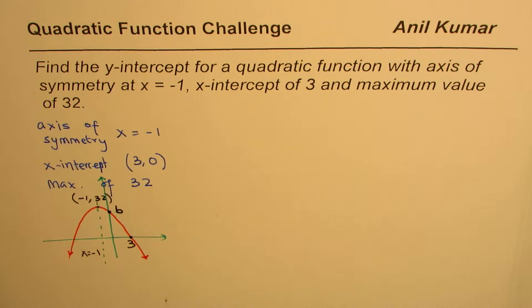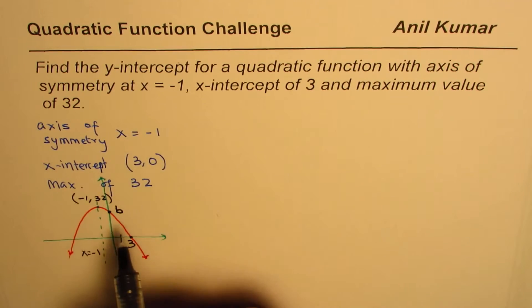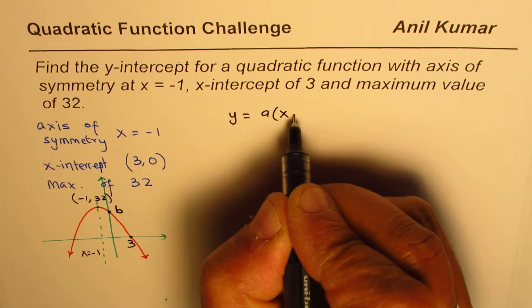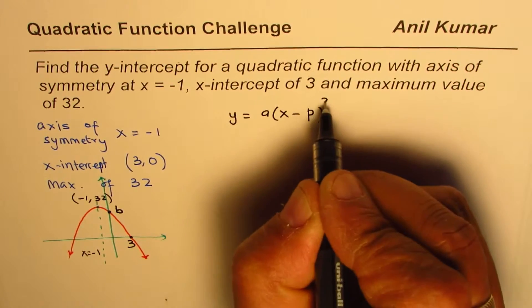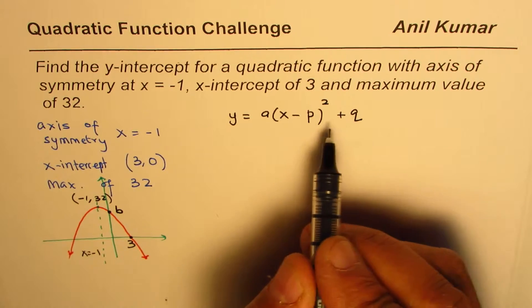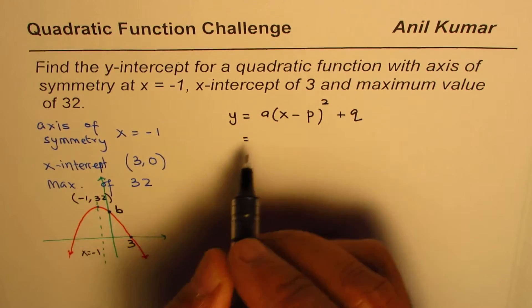Now since we know the vertex, we can write the quadratic function in vertex form, which is y equals a times (x minus p) whole square plus q, where p, q are the coordinates of the vertex.